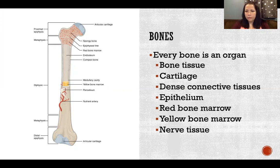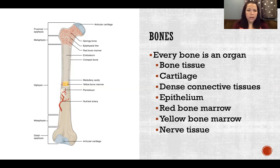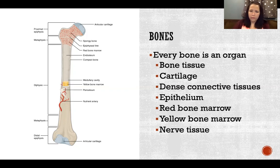The only type of tissue missing in a bone is muscle tissue. Actually, we can make an argument for there being muscle tissue if we count the blood vessels as part of the bone. A bone is very vascular — there are many blood vessels supplying it, and there is smooth muscle that is part of every blood vessel. So we could argue that the smooth muscle of those blood vessels is also part of the bone, in which case we'd have all four types of tissue accounted for.